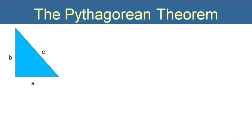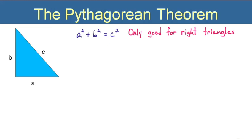First, let's get really familiar with the Pythagorean Theorem. You need to be so familiar with the Pythagorean Theorem that you can do it mentally without having to do a lot of scratch work. So here it is: a squared plus b squared equals c squared. Now, this is only good for right triangles, so you cannot use the Pythagorean Theorem on any triangle that you do not already know is right.